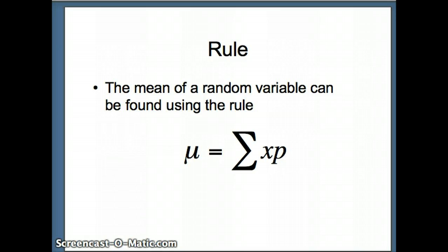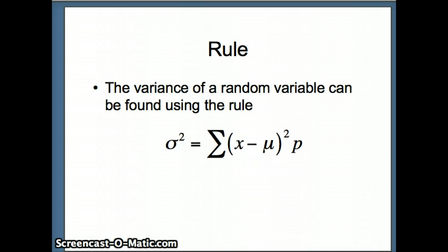The rule is as follows: if we're looking for the mean of a random variable, the mean is simply the sum of x times p. So we have the x column and the p column — multiply those together and take their sum to get the mean. The variance, sigma squared, will be the sum of x minus mu, squared, times p. And the standard deviation sigma is simply the square root of the variance.